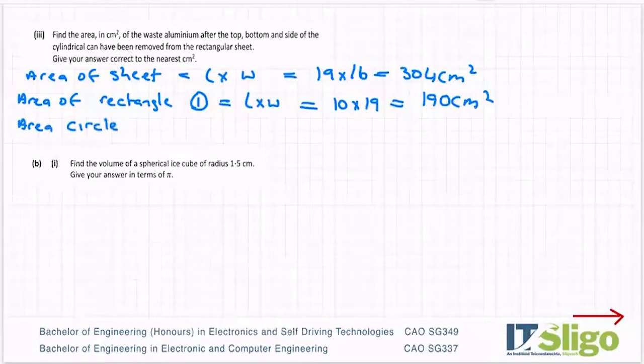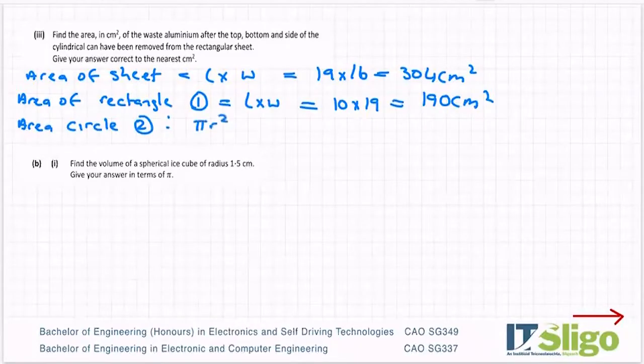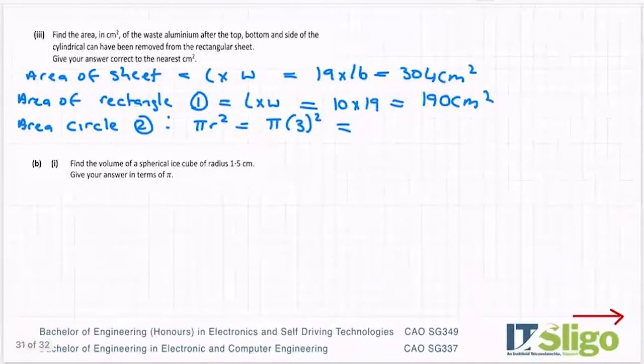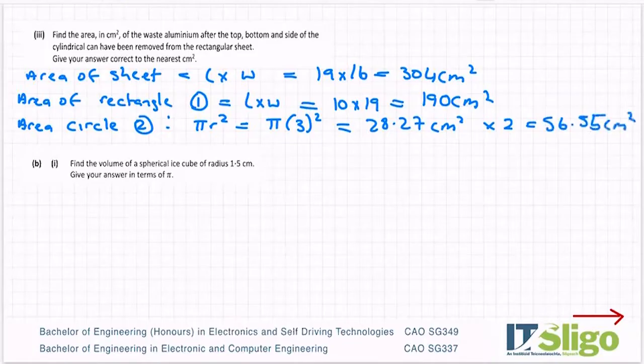Area of circle is pi r squared. So it's pi by 3 squared, wasn't it 3 the radius? So pi by 3 squared, and my calculator is 9 pi, 28.27 centimeters squared. I'm going to multiply that by 2 because I have two circles. 18 pi or 56.55 centimeters squared. So add them together. So I have 190 plus 56.55 plus 190, and it's 246.55 centimeters squared.